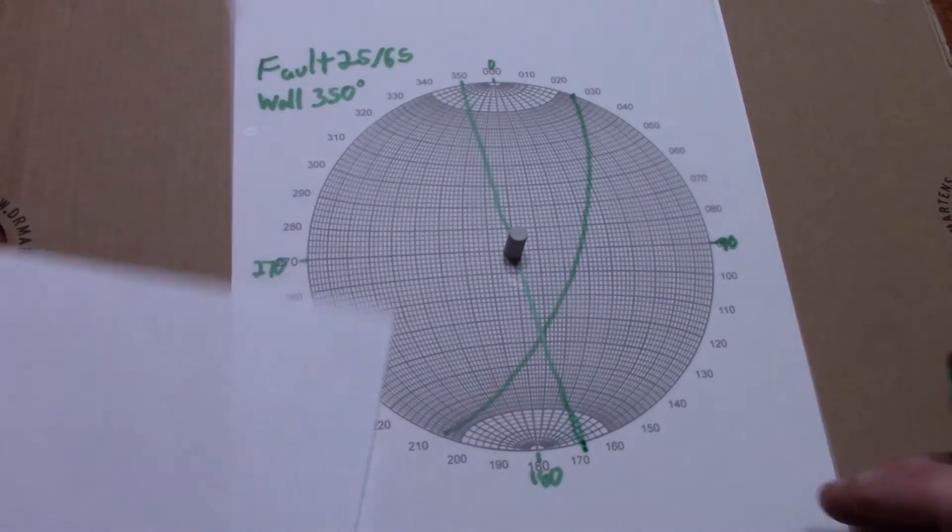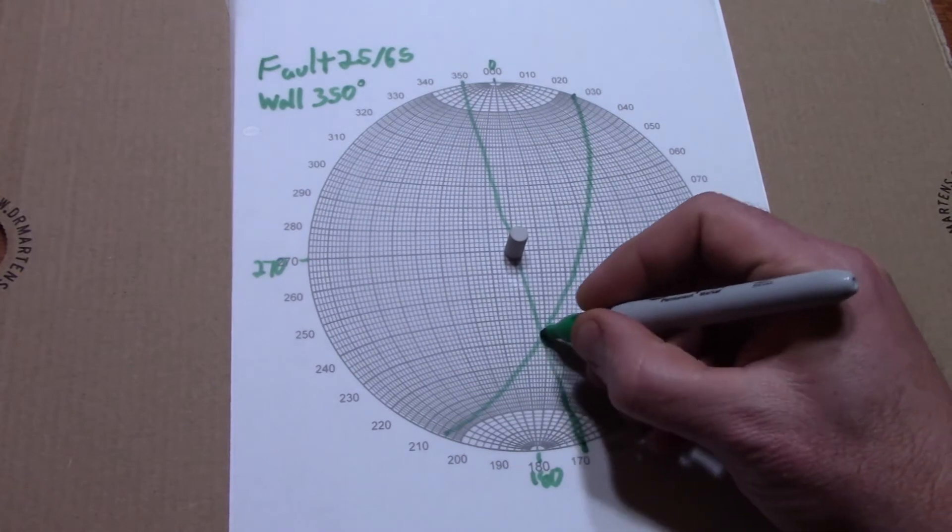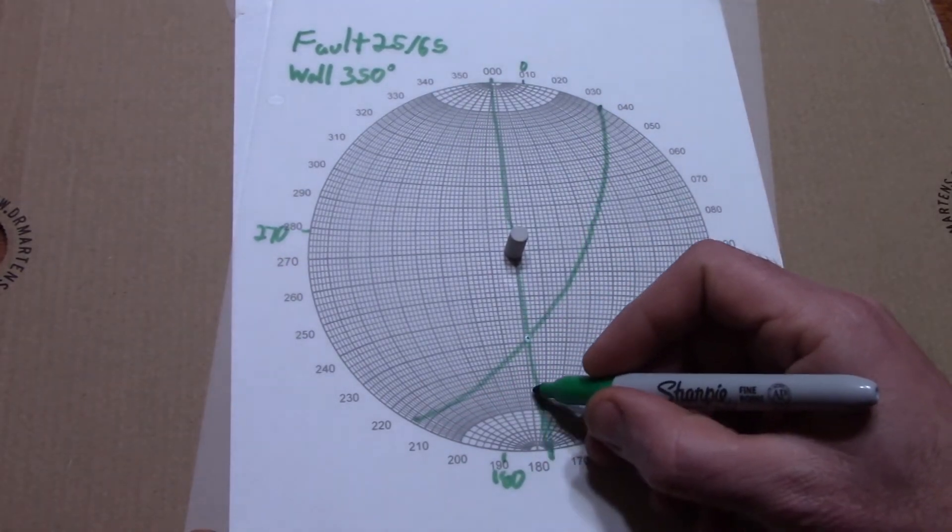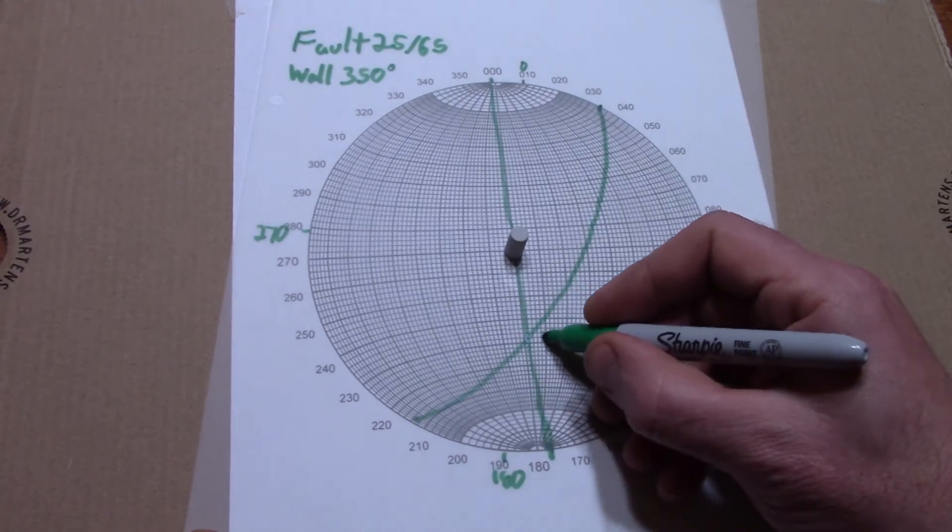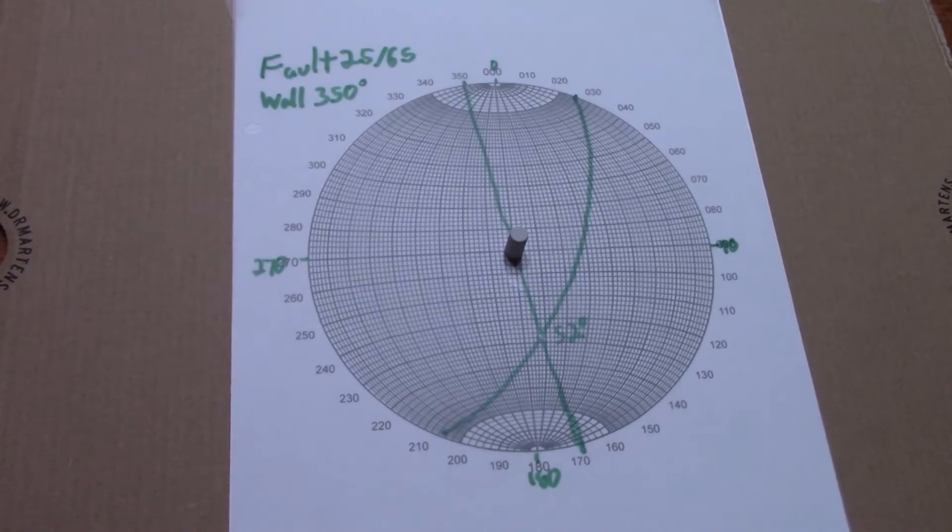The intersection of these two is the apparent dip. So rotate this intersection point onto a cardinal line and count in to get this apparent dip of the fault in this wall perspective, and in this case an apparent dip of 52 degrees from a plane that is actually dipping at 65.